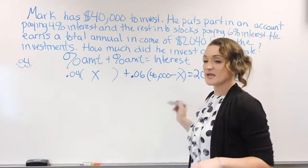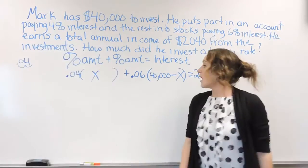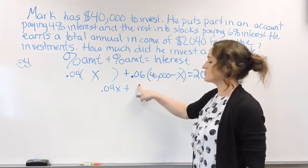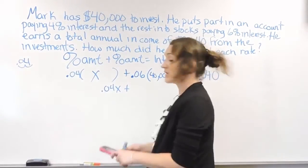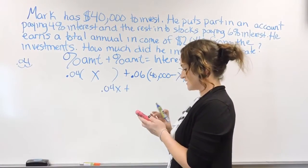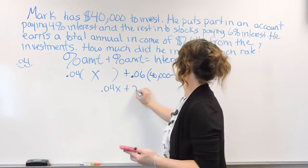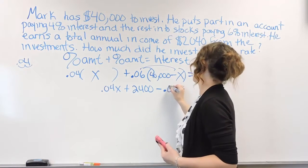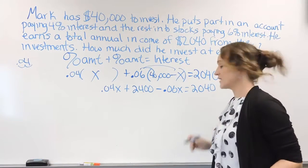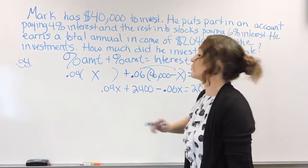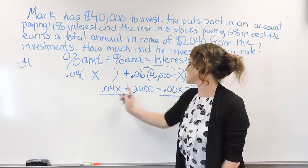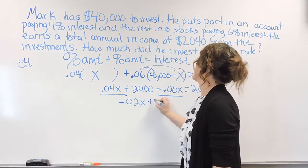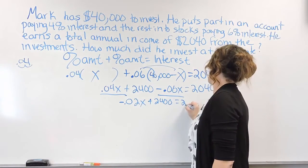Now that we have this set up, let's solve the problem. We have 0.04X plus 0.06 times (40,000 minus X) equals $2,040. Distributing: 0.06 times $40,000 is $2,400, and we subtract 0.06X. So we get 0.04X minus 0.06X plus $2,400 equals $2,040. Combining like terms, that gives us negative 0.02X plus $2,400 equals $2,040.